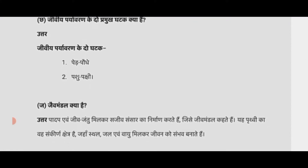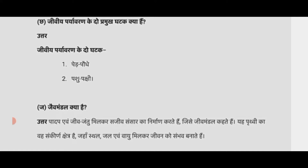Next question: जैव मंडल क्या है? पादप एवं जीव-जंतु मिलकर सजीव संसार का निर्माण करते हैं। जहाँ स्थल, जल एवं वायु मिलकर जीवन को संभव बनाते हैं, उसे जैव मंडल कहलाता है।